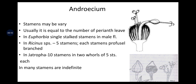Androecium: stamens may vary in number, usually equal to the number of perianth leaves. In Euphorbia, there is a single stalked stamen in the male flower. In Ricinus (castor), there are 5 stamens, each with profusely branched filaments. In Jatropha, there are 10 stamens in 2 whorls of 5 each. In many species, stamens are indefinite.